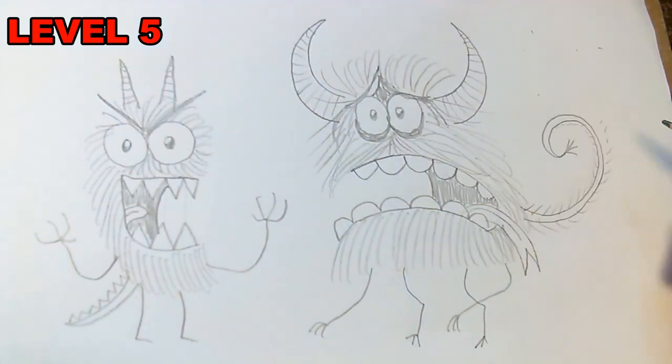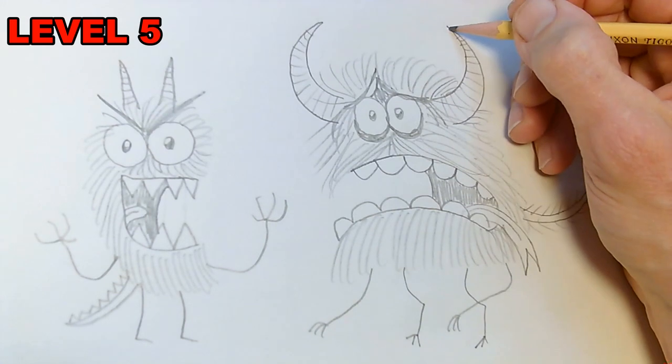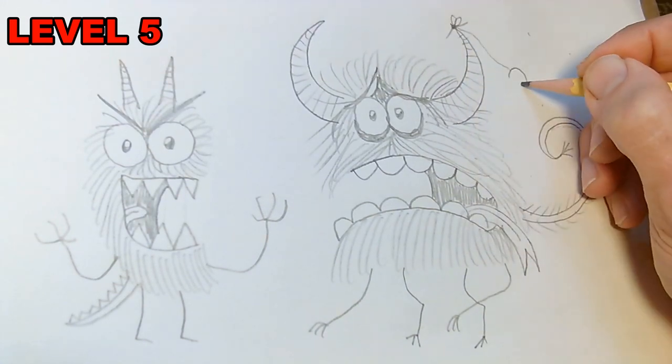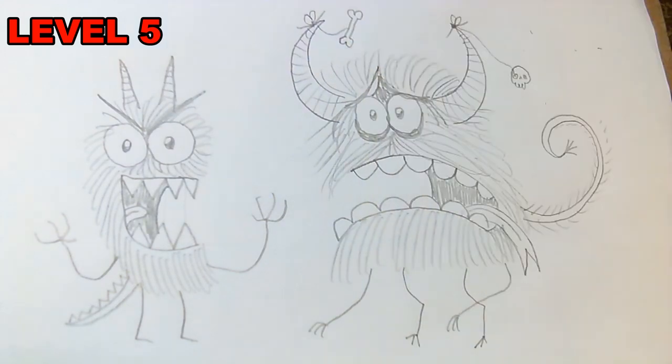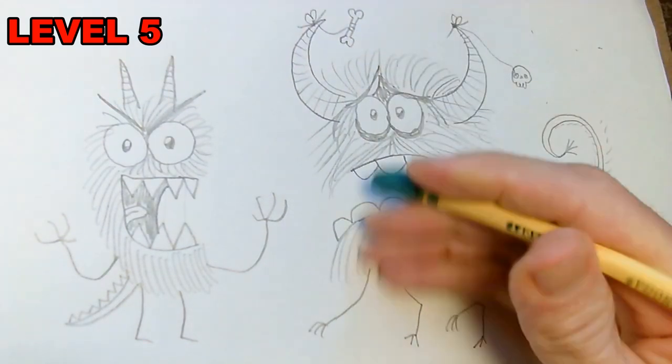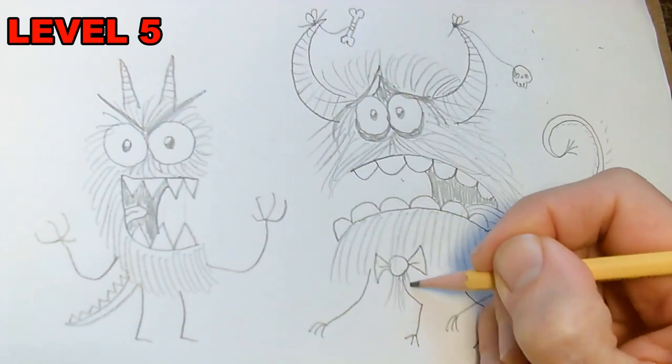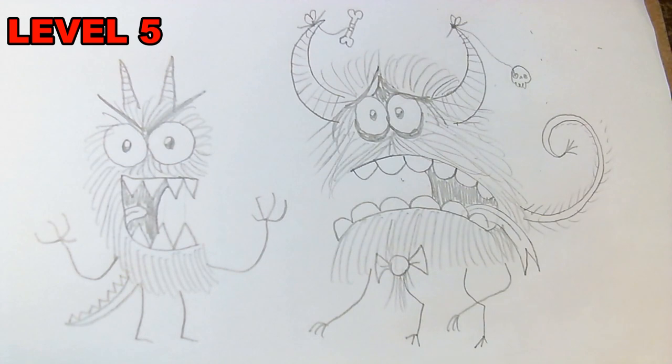And of course, some of these monsters go in and tie all sorts of things to their horns—little skulls and bones—and that's monster jewelry for you. Some of them really get into bow ties, apparently. That's getting dangerously close to a level six monster, so I think we'll stop there for today.